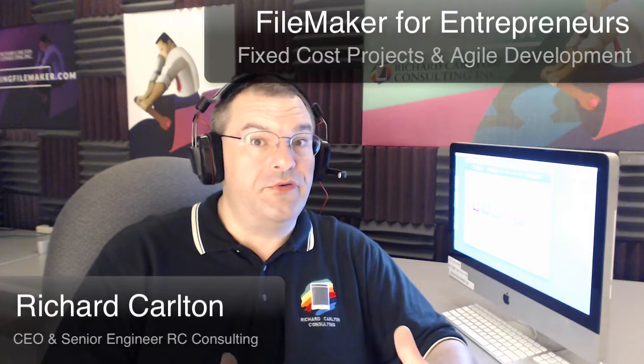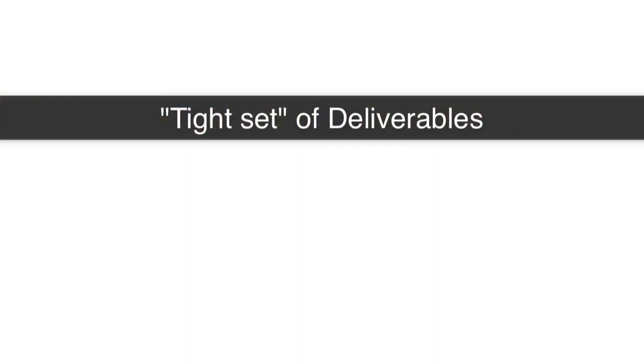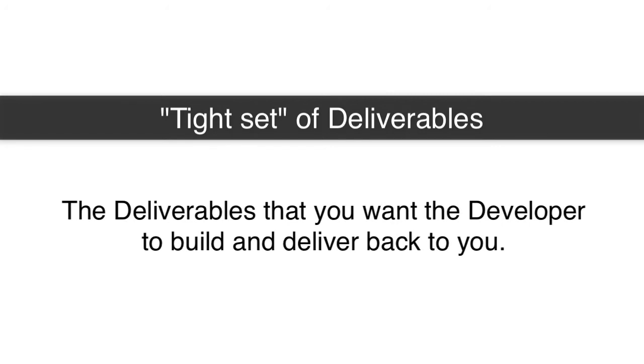In this video we're going to pick up the conversation about doing a cost estimate for your proposed software product. In the last video we talked about doing a tight specification — what we call a tight set of deliverables — the deliverables that you want the developer to build and deliver back to you.